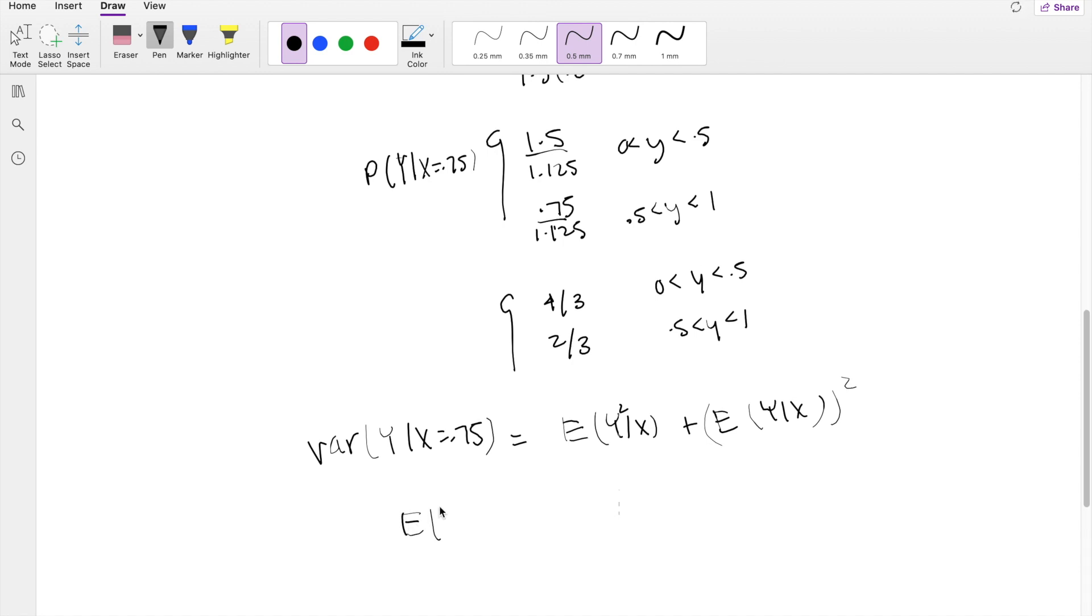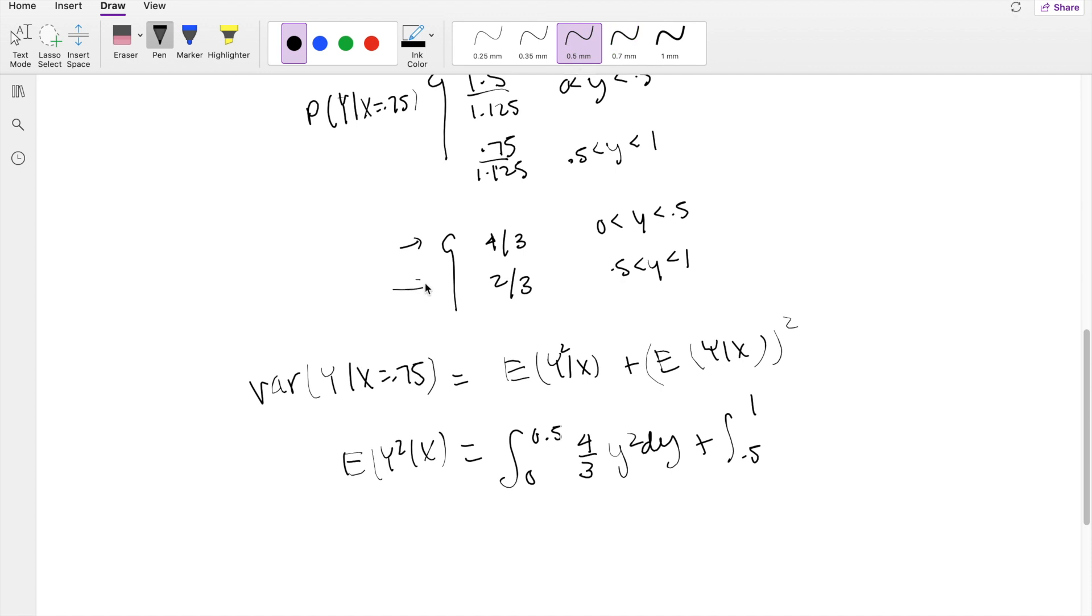So starting off with the second moment here, y squared over x, this is basically just equal to the probability function times y squared. So the probability function going from 0 to 0.5 is this here. So that's 4 third, y squared, dy, plus going from 0.5 to 1, we have a different integral, and that's going to be this one right here, 2 third, y squared, dy.